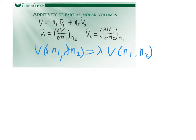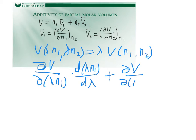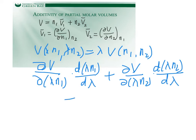Now I'm going to differentiate both sides with respect to lambda. On the left-hand side, applying the chain rule gives: (∂V/∂(λN1)) · N1 + (∂V/∂(λN2)) · N2. The right-hand side differentiates simply to V(N1, N2).